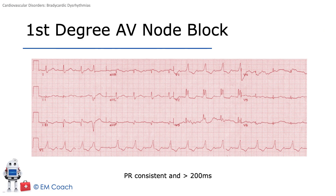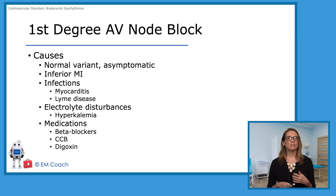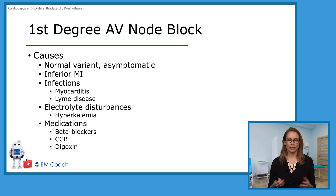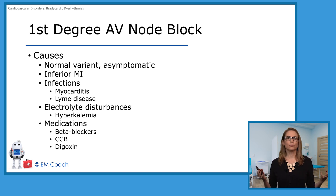A first degree AV nodal block is shown here. In this case, you have a consistent PR interval — the PR is always the same, but it's over 200 milliseconds. This is often a normal variant and asymptomatic, and we just see it when we do an EKG for other reasons.